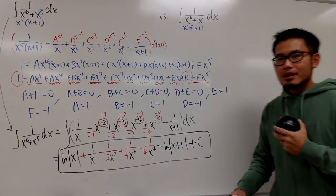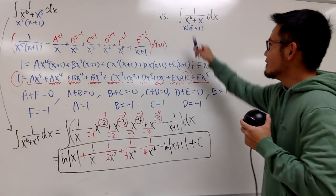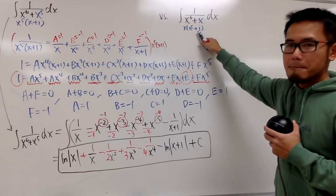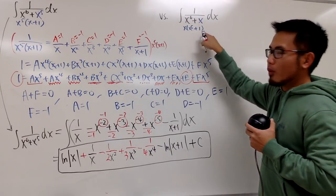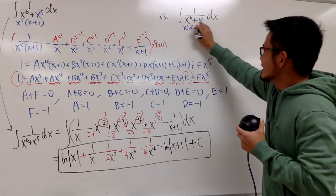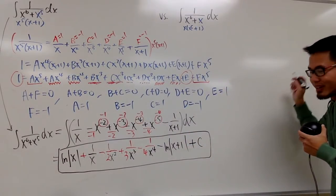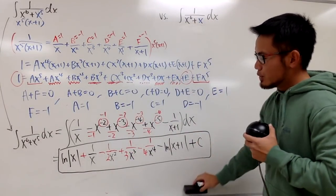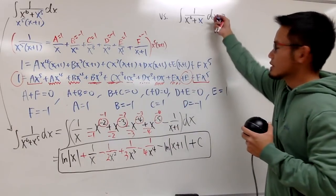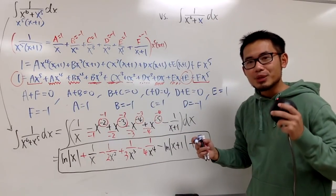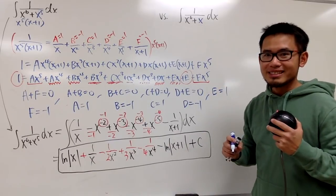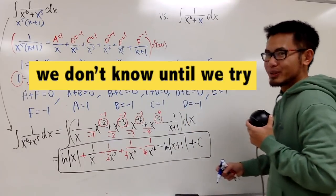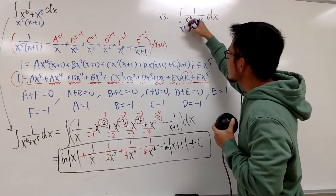Now how about this one? Earlier I only factored the x out: x times (x to the 5th power plus 1). In fact you can factor more, but if you factor more the factor is going to be pretty horrible. So let's think about this: sometimes we can factor out the smallest exponent — which we did, that was x to the 1st power. But sometimes we can also try to factor out the biggest exponent, and maybe good things will happen. Why don't we try to factor out x to the 6th power?